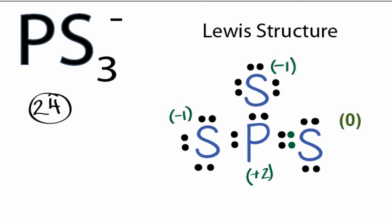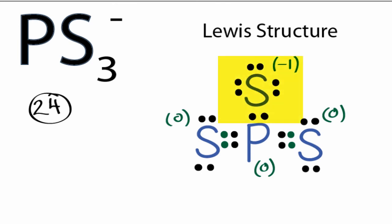The way we solve that is to form another double bond. Let's take these two valence electrons here and move them to the center to form a double bond. If we recalculate our formal charges, they'll look a little bit better. You can see everything's zero except that sulfur on the top with the single bond, which still has a -1 formal charge.